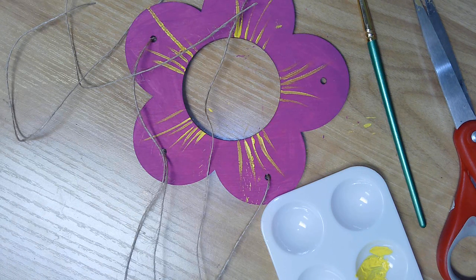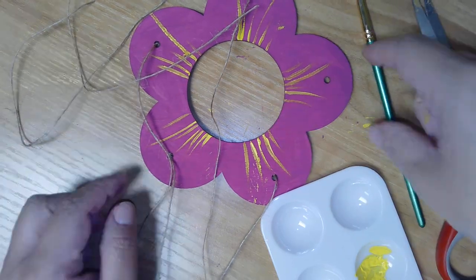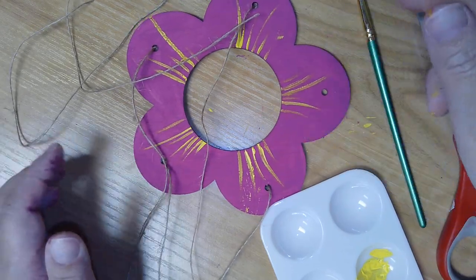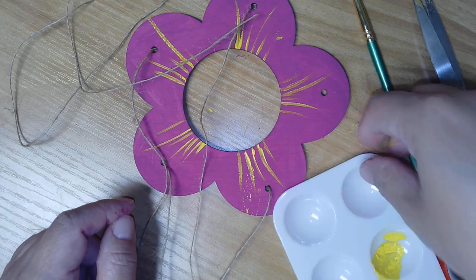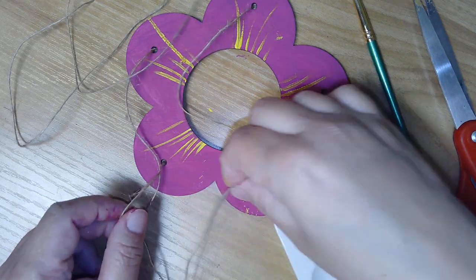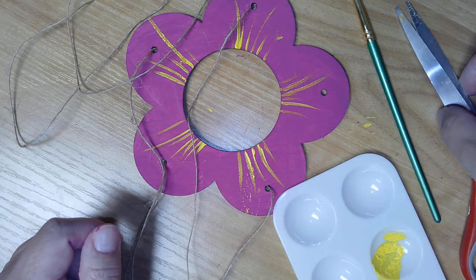Hello everyone, welcome to Homemakers. Today we're painting a bird feeder. In your kit you should have a flower—yours will be blank, I've already painted mine. You should have some paint, a couple of brushes, a palette, and some twine. You'll want to grab some scissors so we can cut the twine.